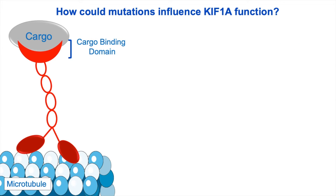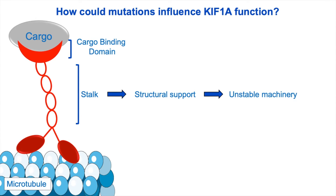Next, we will talk about the KIF-1A stalk. The stalk is an important structural component to our KIF-1A protein, much like a truck would need a frame, beams, and axles to hold the structure together. Just imagine if the frame of your car was loose and unstable as you were trying to drive down the road. If a mutation in the stalk of KIF-1A is affecting foundational structural components needed to make KIF-1A a functioning transporter, then transport would become very difficult.